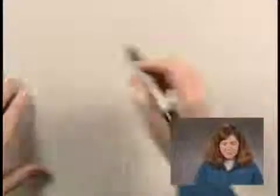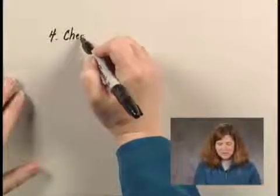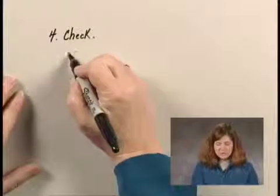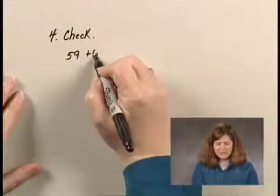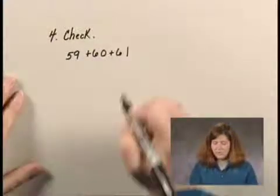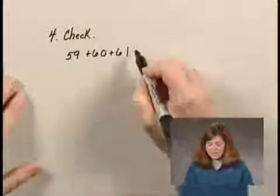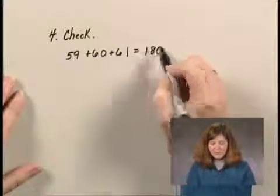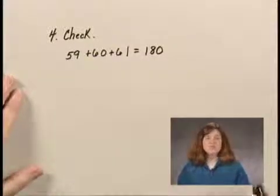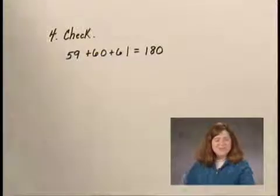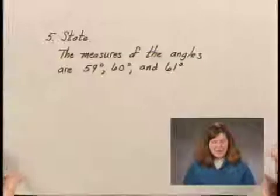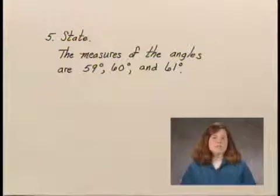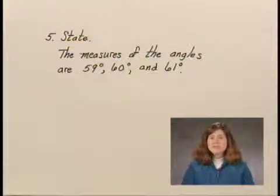So in our check step, step 4, since we have 3 consecutive numbers, 59, 60, and 61, we add them together and we get 180. So they do form a triangle. And we can state then that the measures of the angles are 59 degrees, 60 degrees, and 61 degrees.